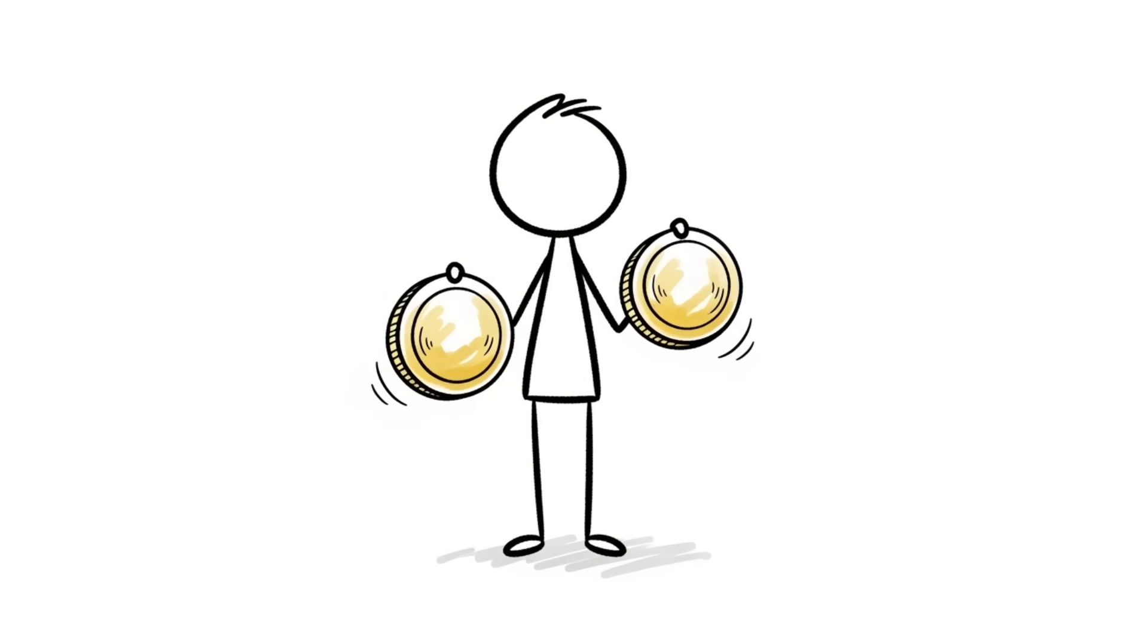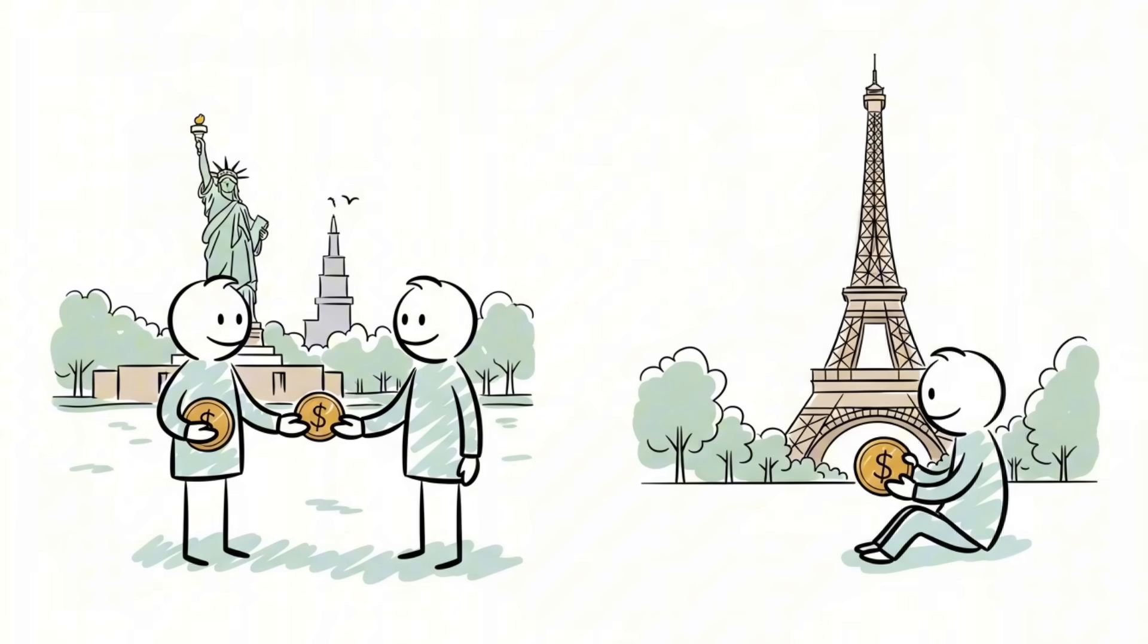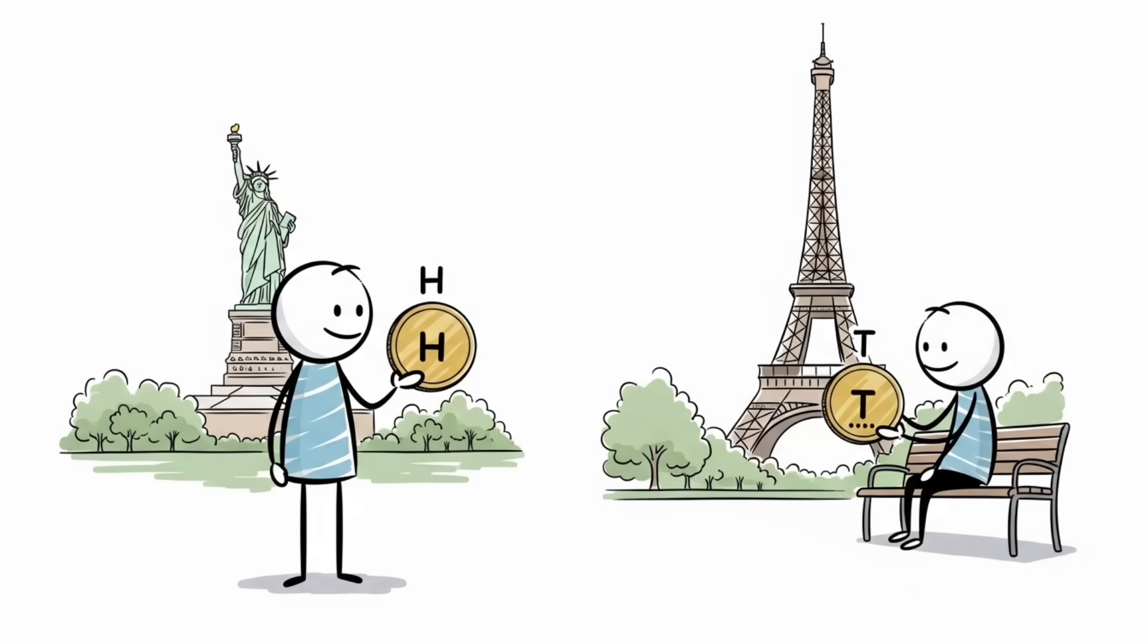Number three, Einstein's spooky connection. Imagine you have two coins. You give one to a friend who then travels to the opposite side of the world. The instant you look at your coin and see it's heads, you know instantly that your friend's coin is tails.